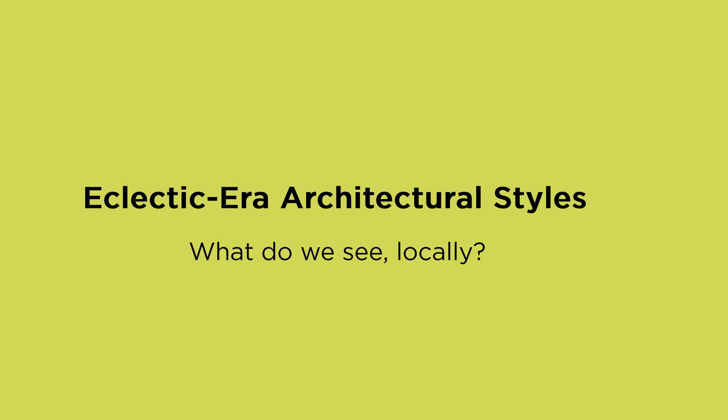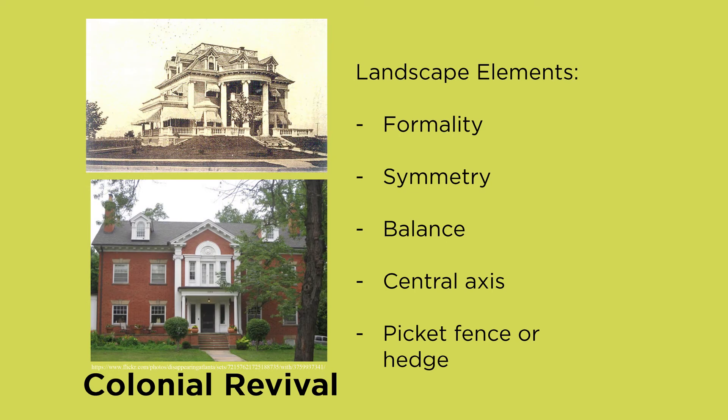So locally, within the eclectic era, what general rules or tendencies can we apply? Colonial Revival — whether strict colonial revival, Dutch colonial, or Georgian — you can draw heavily on the colonial era for this. We're seeing formality, symmetry, and balance. Because these buildings are often perfectly symmetrical, they work well with a central axis leading up and mirrored gardens on either side. Drawing back to the original colonial period, hedges and picket fences are very common and very appropriate.